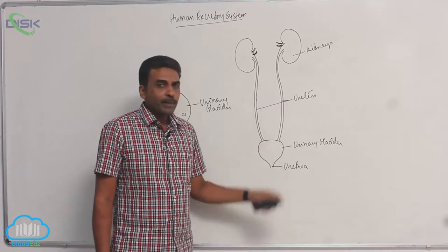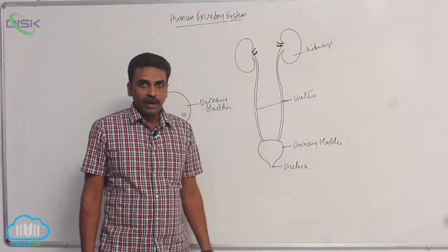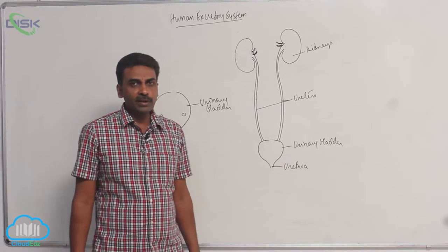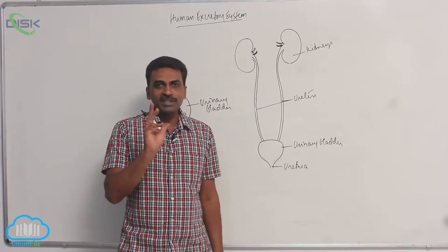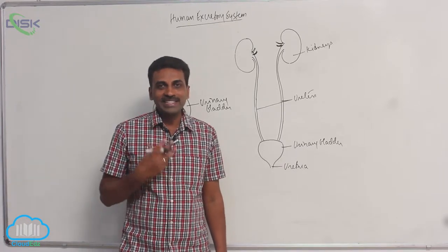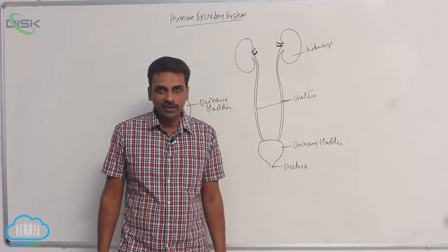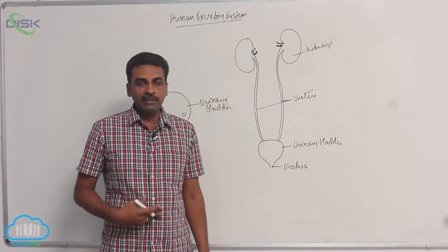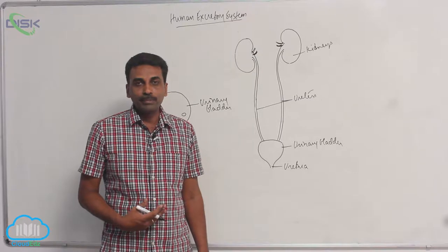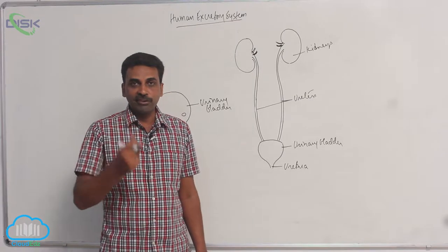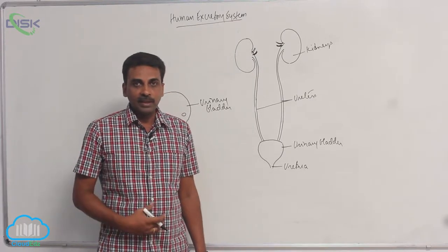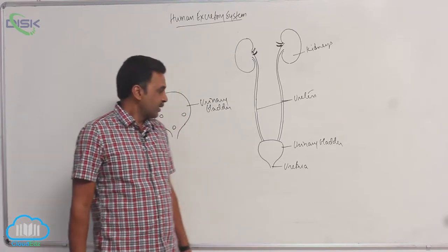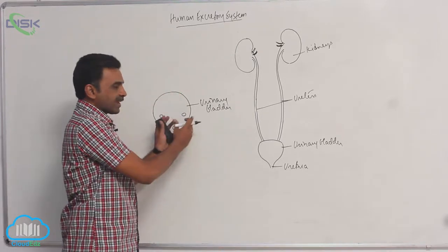The ureters open into the urinary bladder. The urinary bladder is a pear-shaped, distensible sac-like structure present in the pelvic region, very close to the pubic symphysis — inferior to the pubic symphysis.